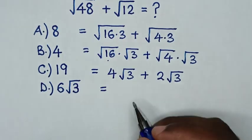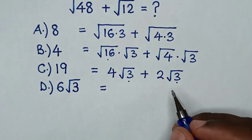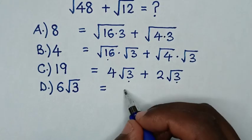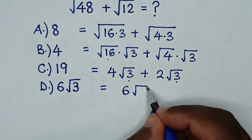Then it will be equal to, square root of 3 is common, so 4 square root of 3 plus 2 square root of 3 is 6 square root of 3.